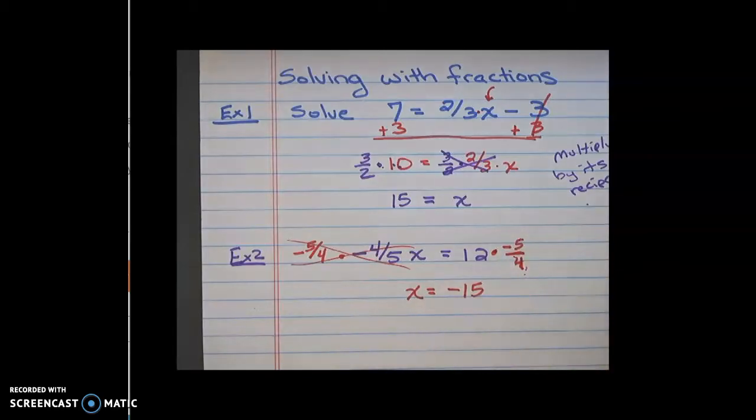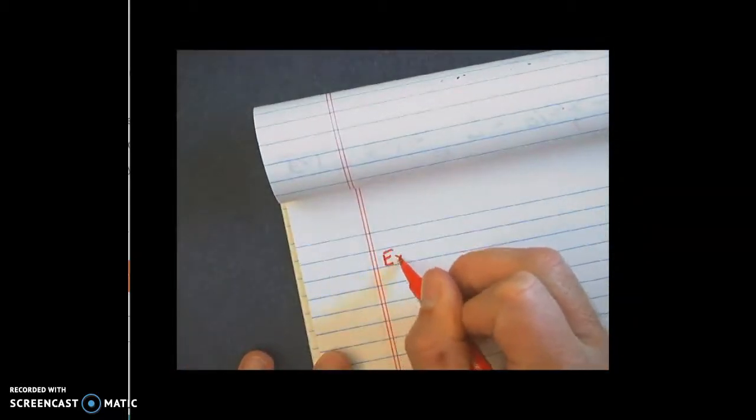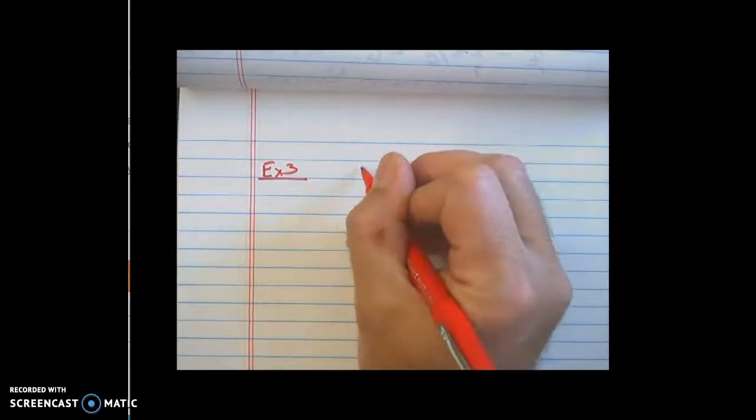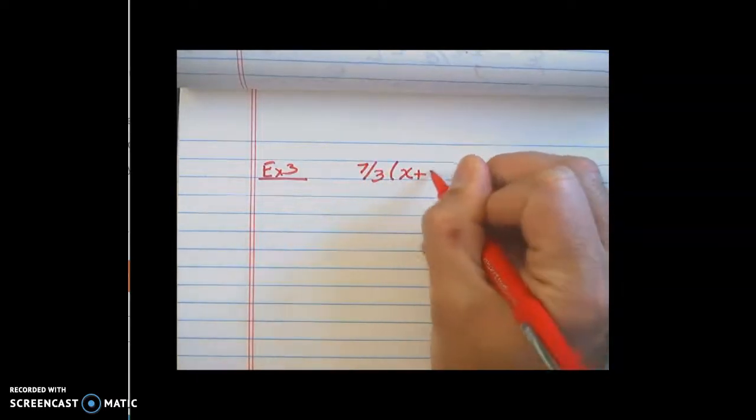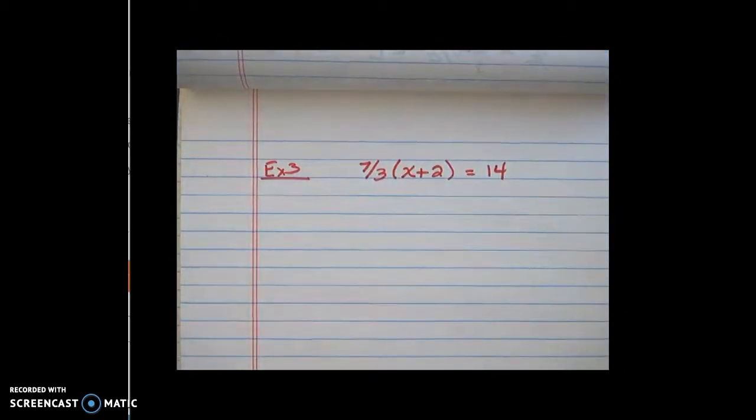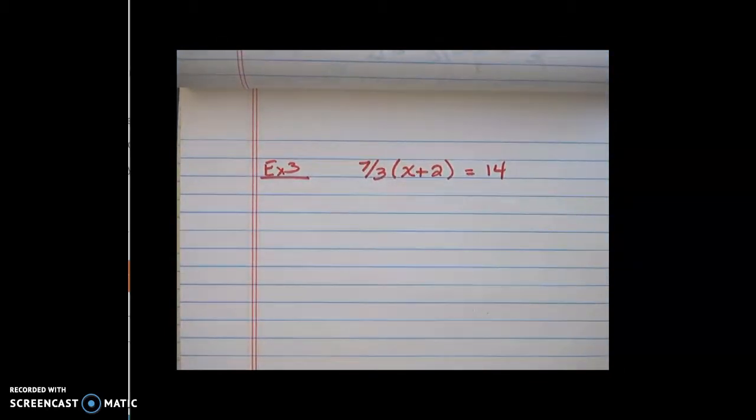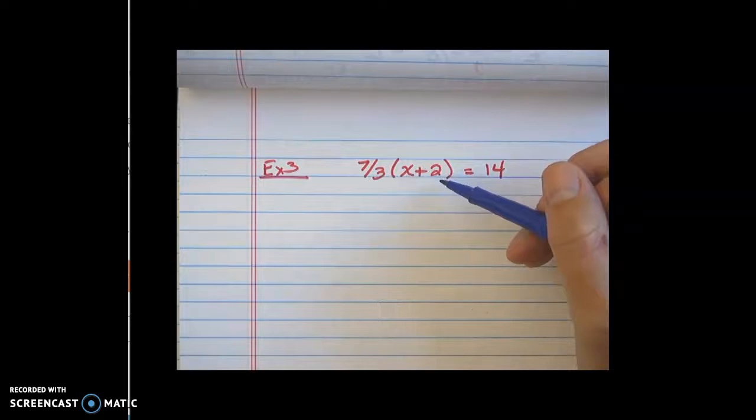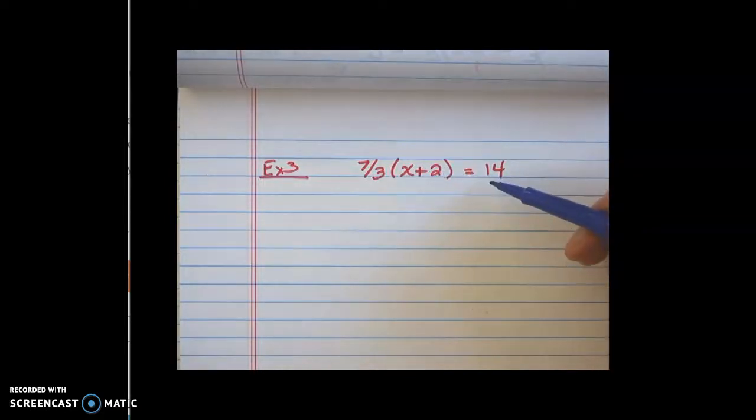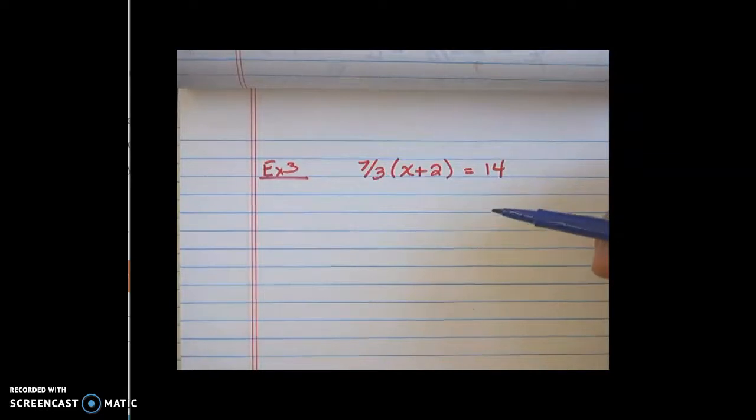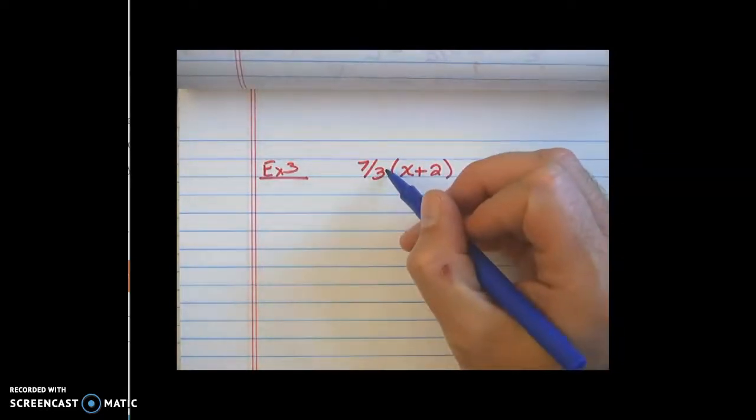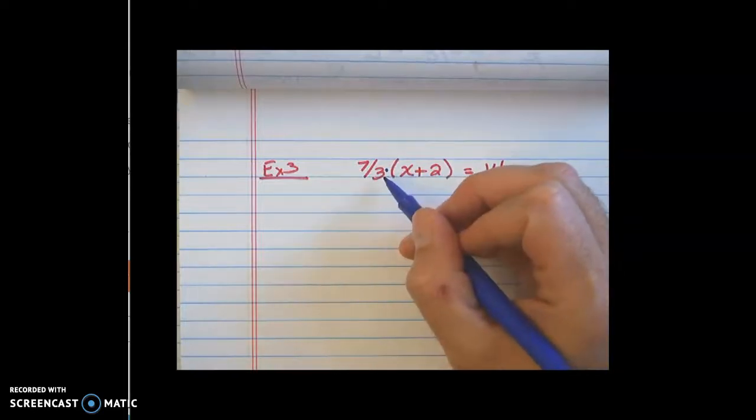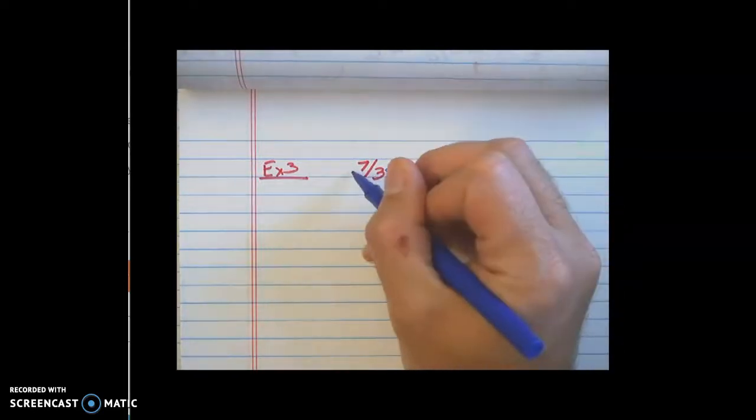Now what I really wanted to show you today is what happens when we have to distribute a fraction. Most students do okay with the problems we just had above, but what if it looks something like this? What if it asked us to solve 7/3 times the quantity x plus 2 equals 14? A lot of students would start a problem like this and distribute the 7/3. And that's fine. You could distribute the 7/3, but then you're going to have to do 7/3 times 2, and you're going to get 14/3 as a fraction. Then you're going to have to subtract that from 14, which might not be the easiest to do. Instead, we can just multiply by the reciprocal.